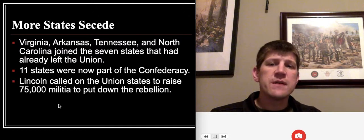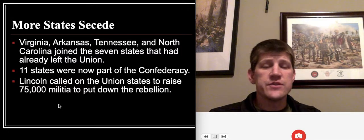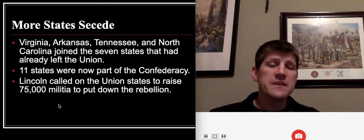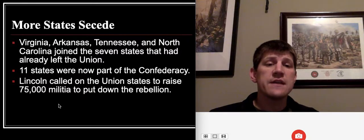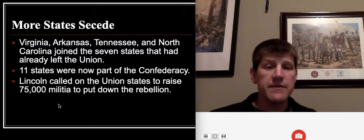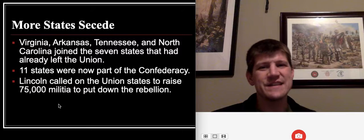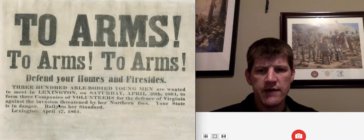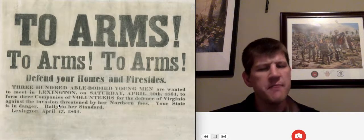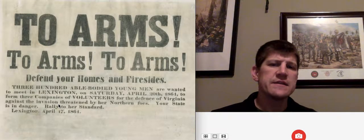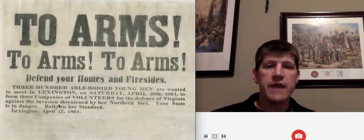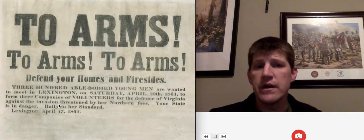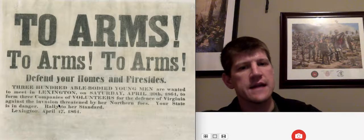After the Battle of Fort Sumter, the additional states of Virginia, Arkansas, Tennessee, and North Carolina joined the original seven states of the Confederacy — now there are 11 states in the Confederacy. At this point Abraham Lincoln called for the states to raise an army of 75,000 volunteers to put down this rebellion. Lincoln was going to realize very early that that's a tiny number, not even close to what's going to be required. Immediately after Lincoln made that call, Virginia began advertising to raise their own army because the Union was going to invade Virginia.